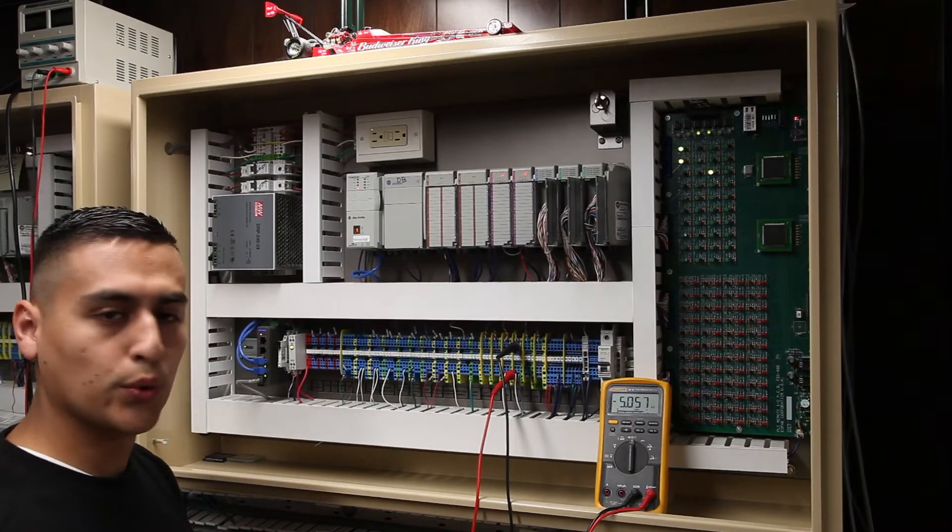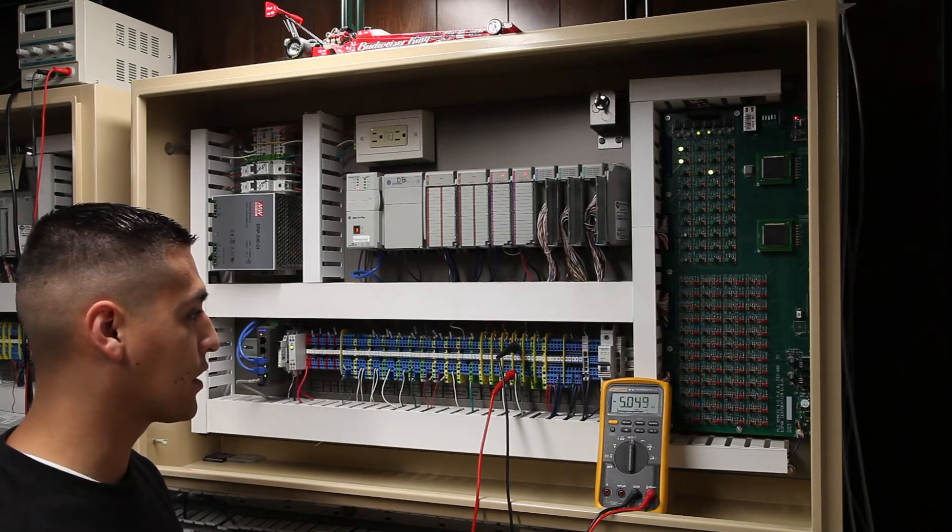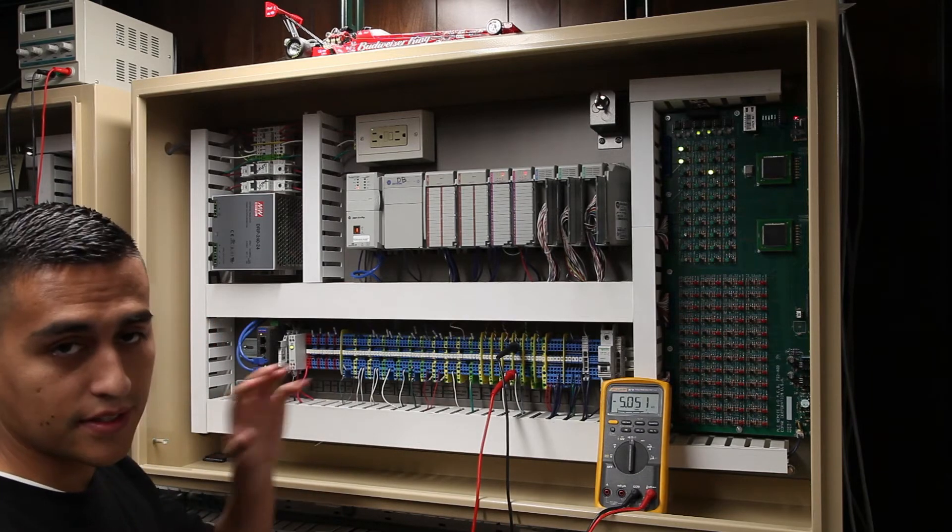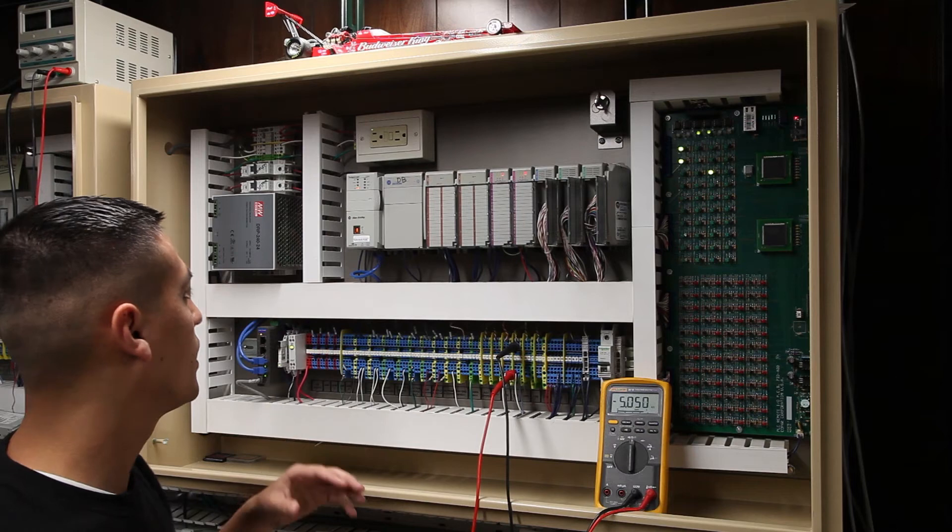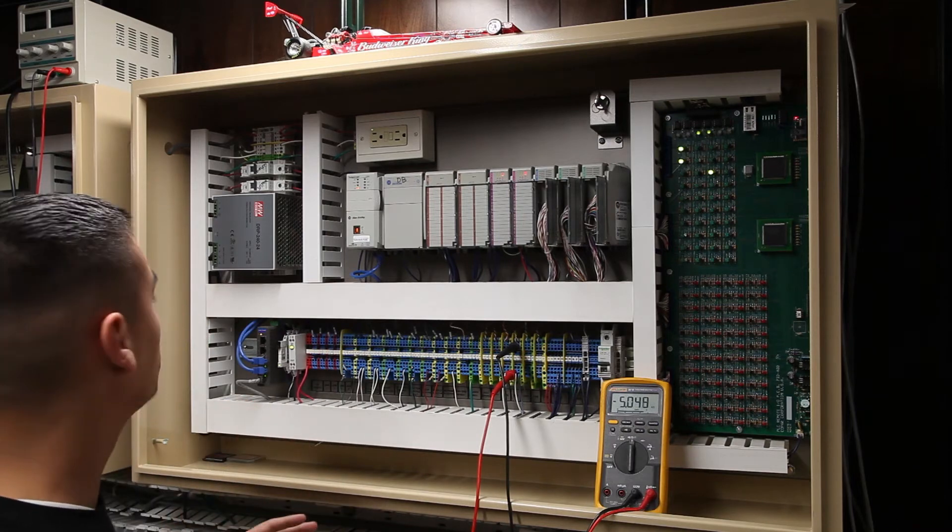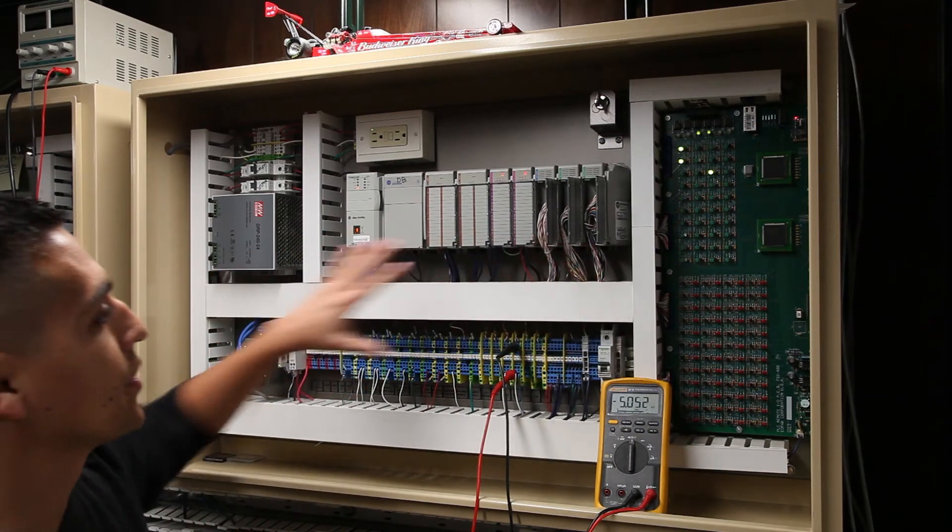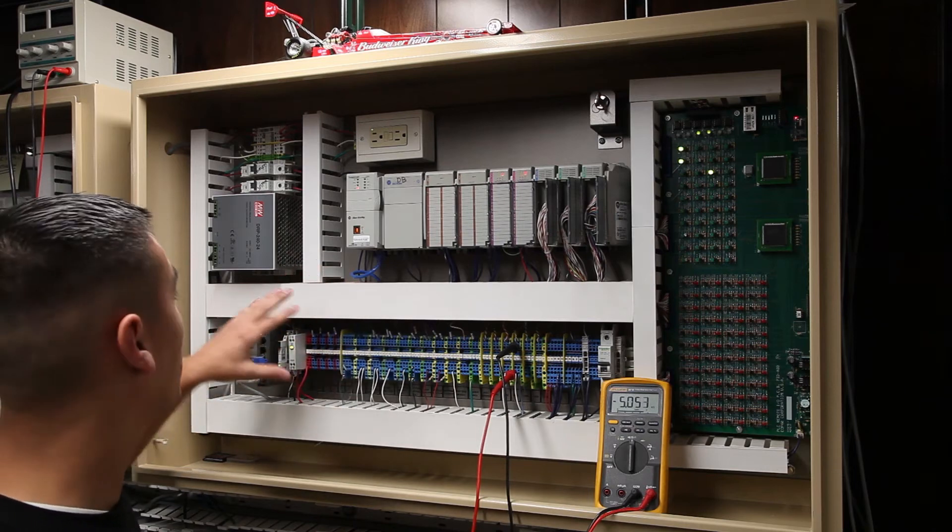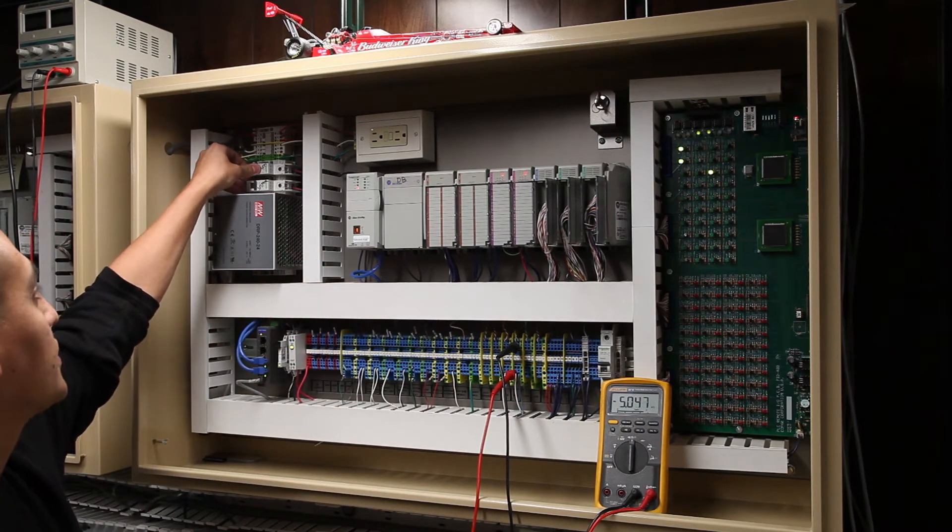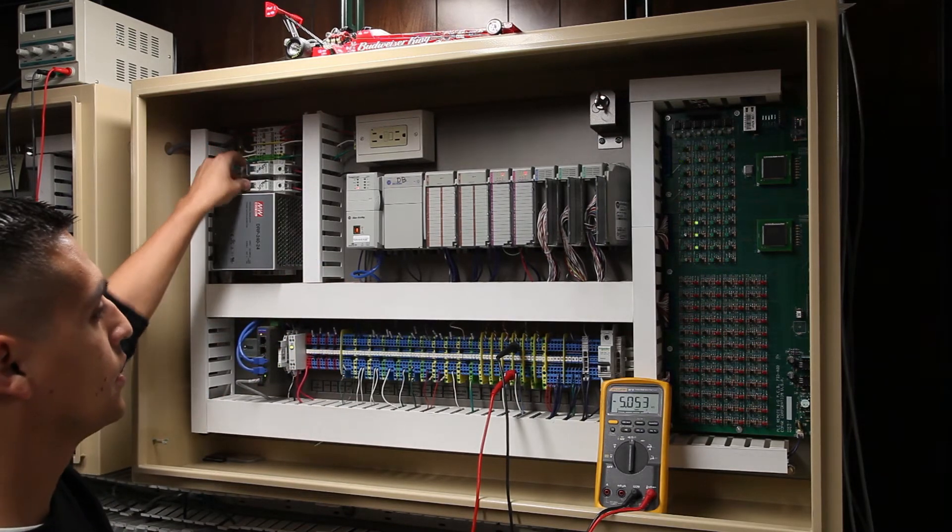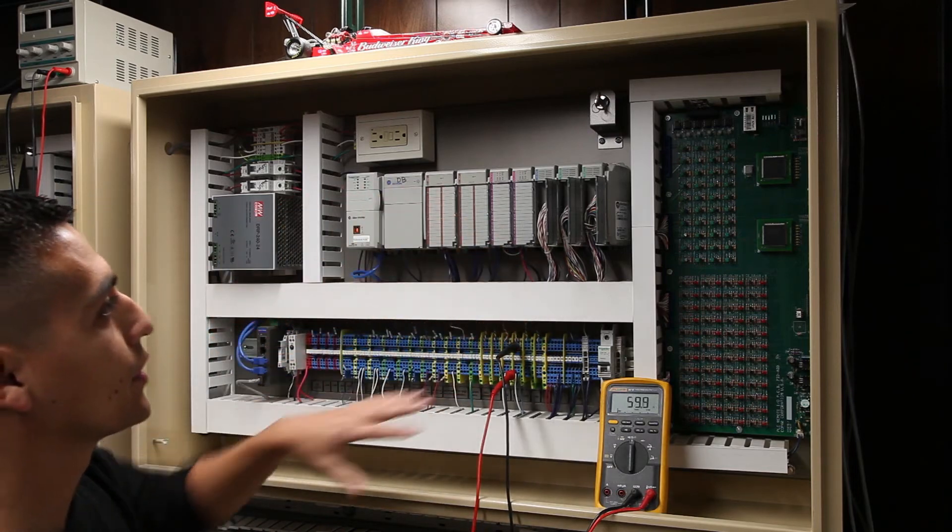This is how we are going to troubleshoot some of the D-Net errors that would occur in the field. This is for the CSSC 8 system. The first thing you want to do is make sure that your PLC, everything in the cabinet, is powered off. You want to hit the breakers, both of them. Make sure you have no power, no lights on.